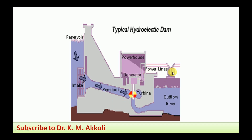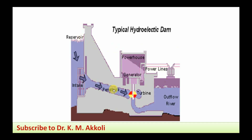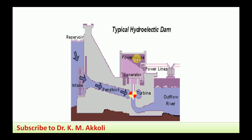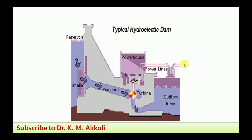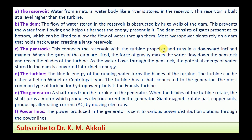Next, in the animation we can see how the flow takes place. From the reservoir the water flows and enters into the turbine, where the turbine blades rotate. That is connected to the generator and electricity is generated. From the powerhouse, through the power lines, electricity is distributed to the grids, and the outflow of the water flows to the tail race.